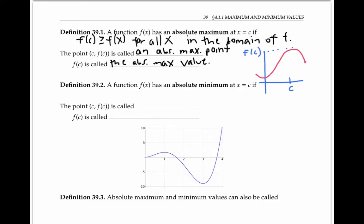An absolute maximum point is a point where the function achieves that maximum value. It's possible for a function to have more than one absolute maximum point if there happens to be a tie for the highest value. But a function has at most one absolute maximum value.